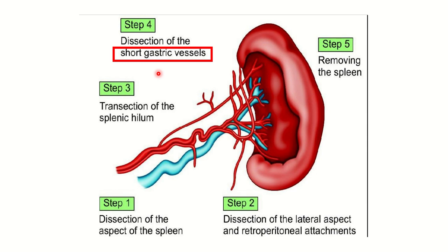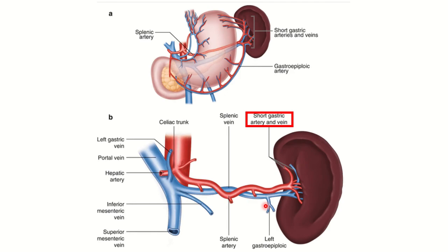In this picture we can see the spleen. During removal of the spleen, we can see the structures located in the hilum and the short gastric vessels arising from the splenic artery. The splenic hilum should be ligated and the short gastric vessels should also be ligated.